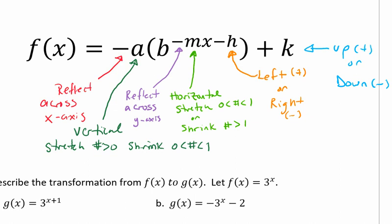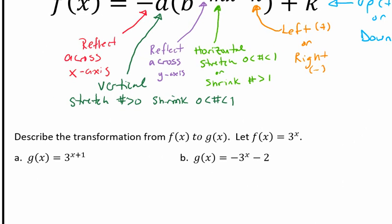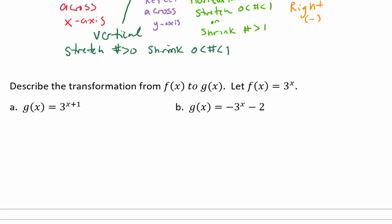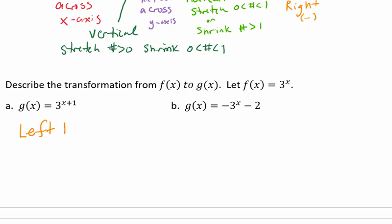Let's do a quick example of a transformation. So here, it's asking us to describe the transformation from f of x to g of x, and we're going to let f of x equal 3 raised to the x. So here, our parent function is 3 raised to the x. So if we look at letter a, we have 3 raised to the x plus 1. So that plus 1 tells us it's going to do something. That's in the h's spot, and we see a plus sign. So that means it's going to move to the left one unit.